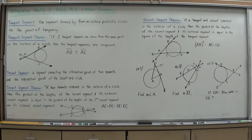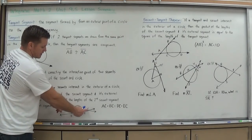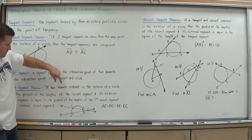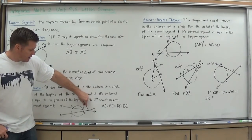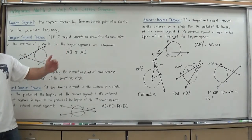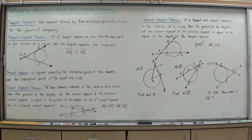This theorem states if two secants intersect in the exterior of a circle, then the product of the lengths of the secant segment and its internal secant segment is equal to the product of the lengths of the second secant segment and its external secant segment. CA is the secant segment. CB is the exterior. So the entire secant segment AC times just its exterior portion BC must stay in proportion and equal the other secant, DC times DE.